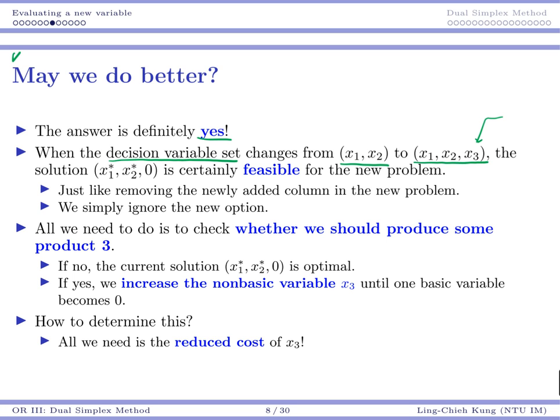Now we have one additional variable. So there is one solution, which is x1 star, x2 star, and 0. This basically means 2, 2, 0 in our example. This is certainly feasible.